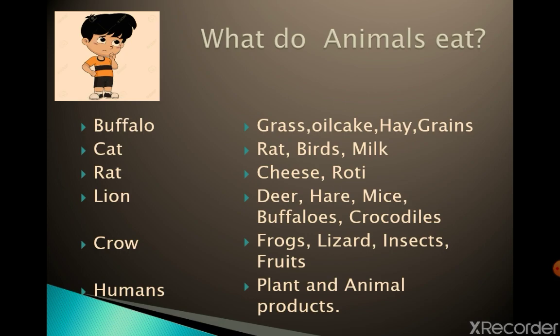We have seen where we get food from — plants and animals. But one question arises: what do animals eat? Buffalo eats grass, oil cake, hay, and grains. A cat eats rat, birds, and milk. A rat eats cheese and roti. The food of a lion is deer, hare, mice, buffaloes, and crocodiles. A crow eats frogs, lizards, insects and fruits.